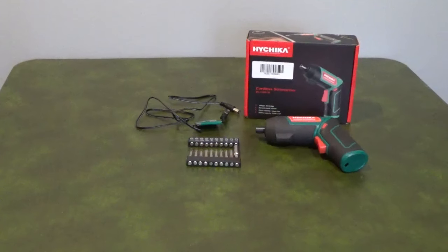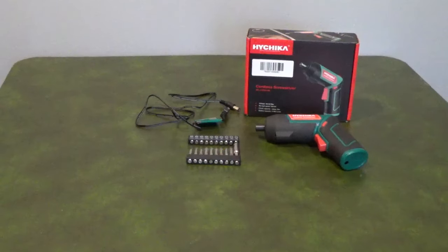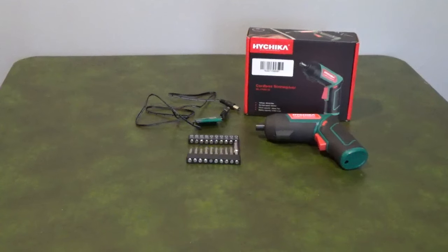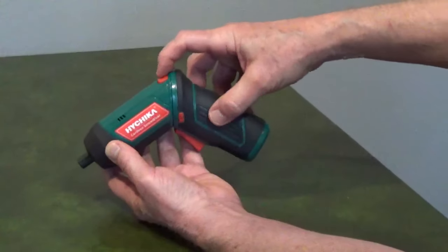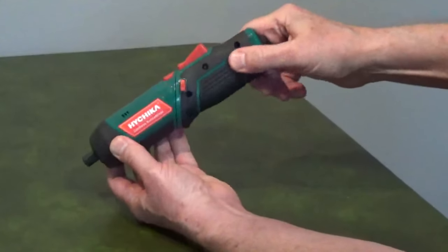The Hi-Chica 3.6-volt cordless screwdriver, model ML-CS6936, has a locking handle that can be adjusted to two positions.